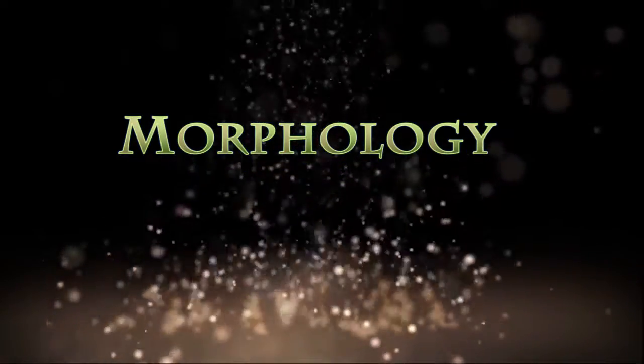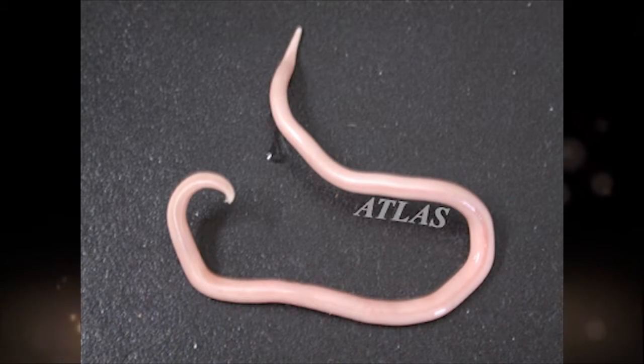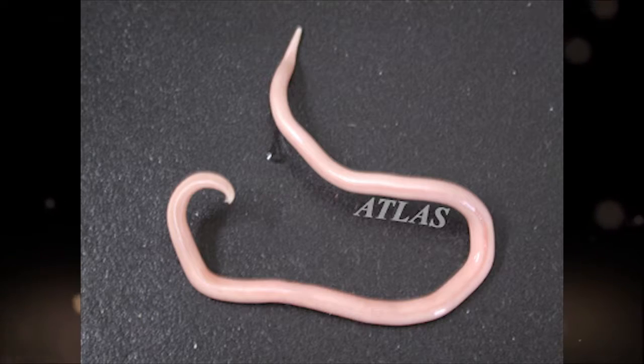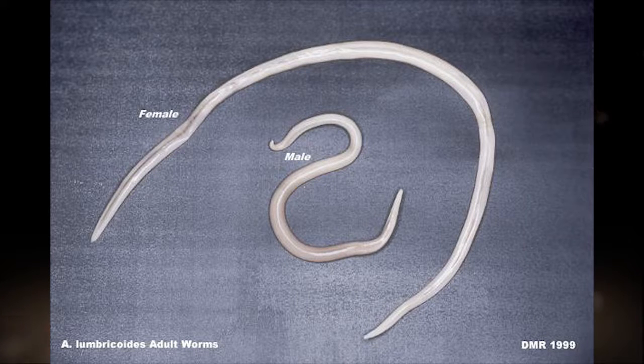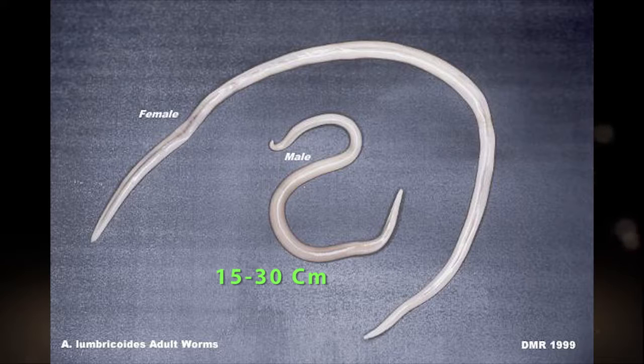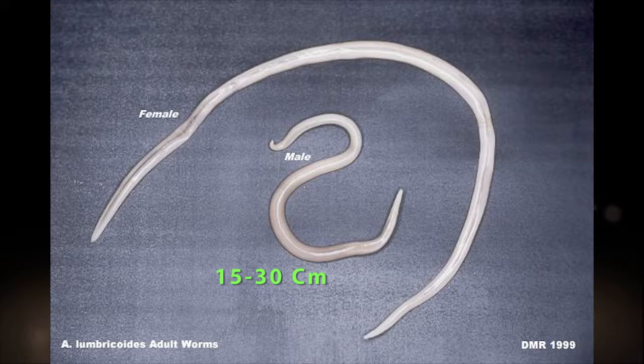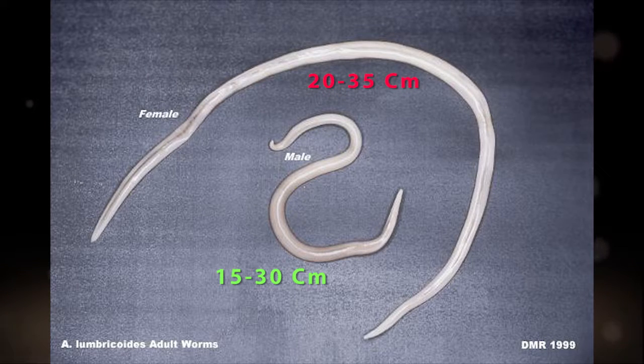Morphology of Ascaris Lumbricoides: we can see large differences between males and females. Usually, males are 15 to 30 cm in length. Females are slightly larger than males, about 20 to 35 cm long.